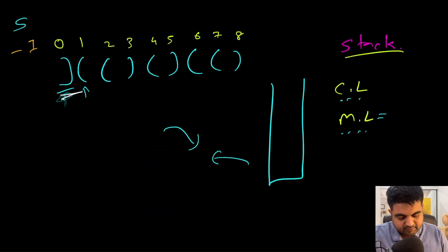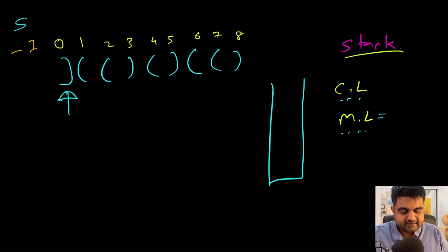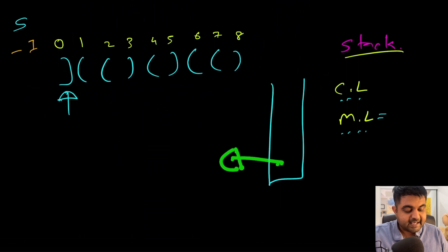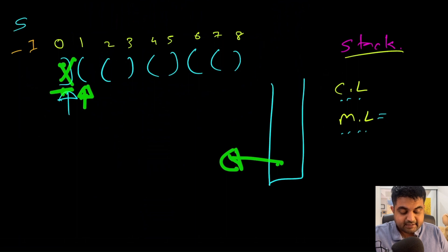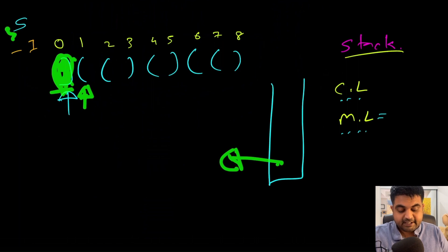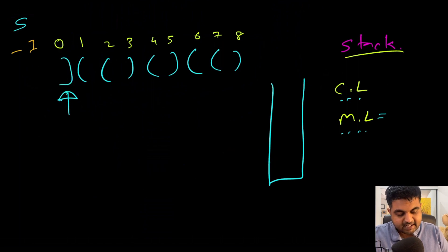So initially, our starting pointer is located at minus one. Now let's start iterating over the solution. First, we identify a closing bracket at index zero. For a closing bracket, we need to pop one element from the stack, but currently the stack is empty. Because the stack is empty, this is an invalid entry — we can ignore this case. Since this character can never be part of a valid substring, we update our start pointer to position number one.